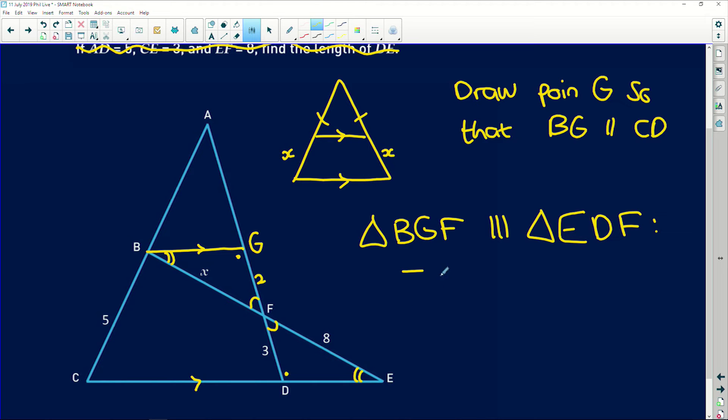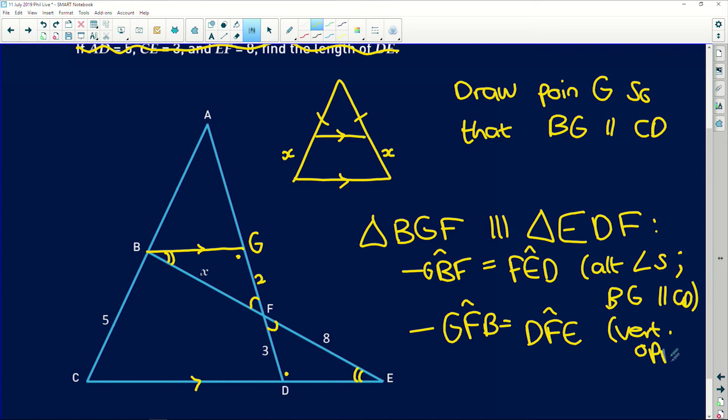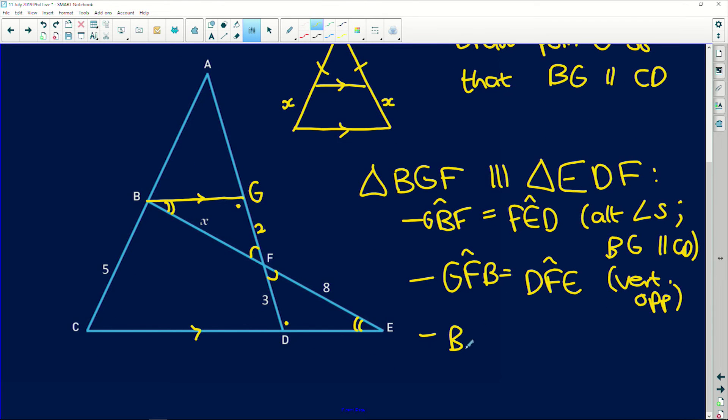Because GBF is equal to FED, alternate angles, and BG is parallel to CD. GFB is equal to DFE because they're vertically opposite. These are these angles here. And then obviously the last angle, BGF is equal to EDF, remaining angle.